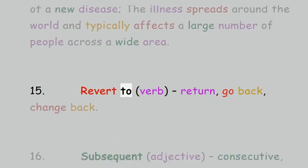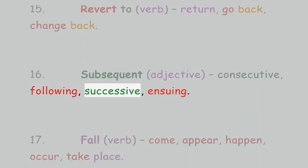15. Revert to, verb: return, go back, change back. 16. Subsequent, adjective: consecutive, following, successive, ensuing. 17. Fall, verb: come, appear, happen, occur, take place.